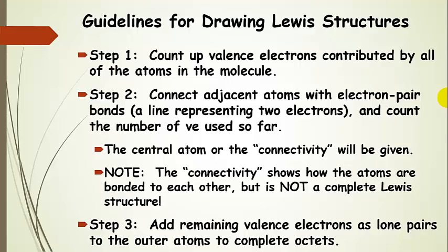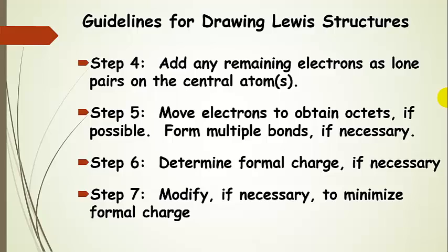For step 3, after you have connected all of your adjacent atoms with single bonds, then you're going to add remaining valence electrons as lone pairs to the outer atoms first to complete octets. You're going to do that until you run out of electrons or run out of places on the outer atoms to put those electron pairs. In the case that you've completed octets on all of the outer atoms and you still have some left over, then you're going to put those as lone pairs on the central atom.